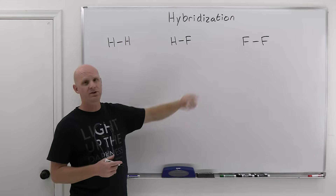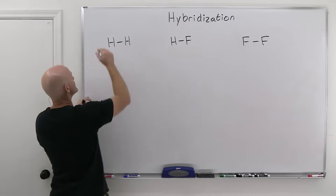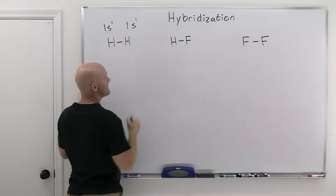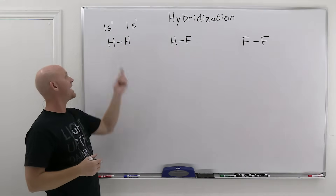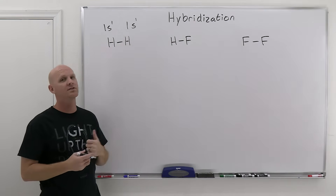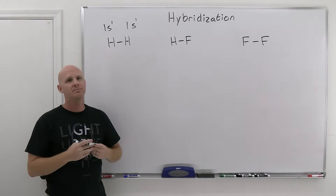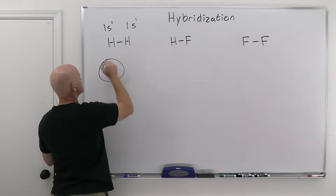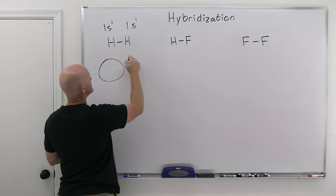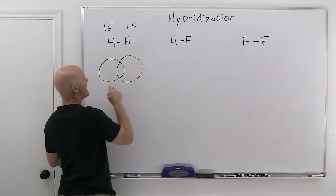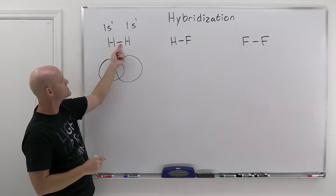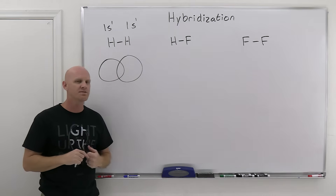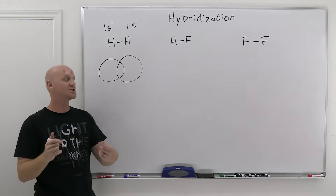With H2, each hydrogen only has a single electron — 1s1 — so it has to be that unpaired electron in the 1s orbital that is involved in bond creation. An s orbital is spherical in shape, so for both hydrogens their s orbitals are going to overlap, and they're going to have the two shared electrons in these overlapping orbitals. That's what valence bond theory looks at as the creation of a bond.